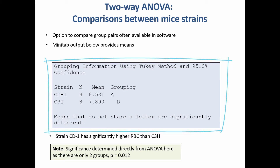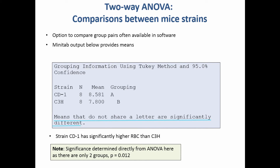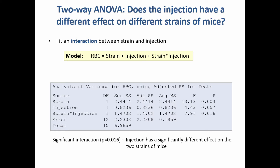There is an option in Minitab which will allow you to see which strains are different. In this case there are only two strains and we showed they were different, but if you had three or more you'd want to see which were different. Groups that do not share a letter are significantly different. Another question you might ask is: the injection effect wasn't significant overall, but perhaps it was having an effect in one strain of mice but not the other. We can address this using something called an interaction — specified in software using a star or a dot — and that term assesses the hypothesis that the effect of the injection was the same for both strains of mice.